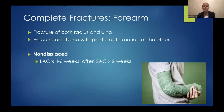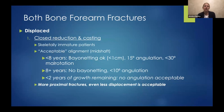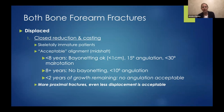Moving on to the forearm — fractures can involve both the radius and ulna, or a fracture of one bone with plastic deformation of the other. Non-displaced goes into a cast, usually a bit longer than wrist fractures and often transitioning to a short-arm cast. For displaced fractures, the same rule applies: the younger they are, the more you can accept. Closer to the growth plate means more remodeling potential. As you move more proximal in the forearm, you're accepting less and less angulation.